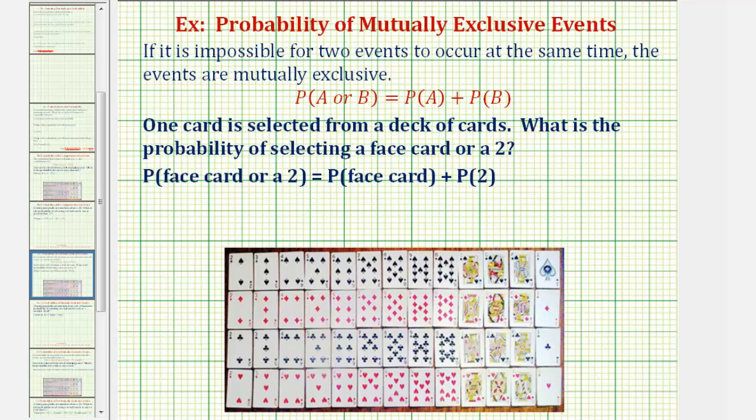A deck of cards is pictured here to assist us. Notice there are fifty-two cards. Twelve of which are face cards. We have the Jack, Queen, and King of each suit. And four of them are twos. Again, one of each suit.